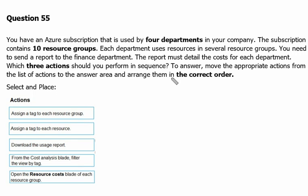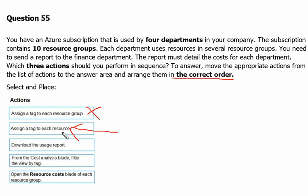Let's go to our answer area and see the correct sequence. First, we have to assign a tag to each resource — not the resource group. We have to be careful: once we assign the tag on the resource we can filter it. If we assign the tag on the resource group it's not going to be inherited, so it's important to assign the tag on the resource itself.